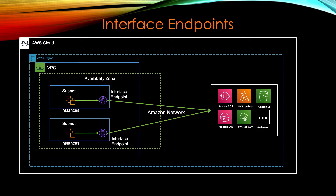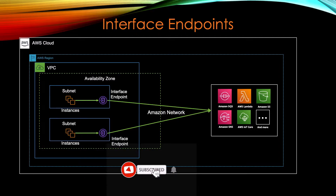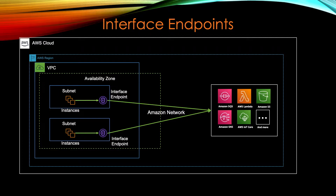When you create an interface endpoint, it creates an ENI in your subnet. You specify which subnet you want while creating the interface endpoint. Your EC2 instance connects to these endpoints rather than a gateway. You get a DNS endpoint for these ENIs — there are three different kinds of DNS endpoints, which I'll explain in the demo, one for each relevant scope.